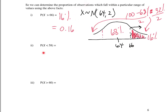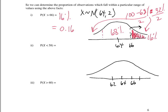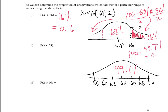Let's continue with values that we know and answer the next one about this same distribution — X is normal with a mean of 64 and a standard deviation of 2. Let's redraw the values. Within one standard deviation are 66 and 62; within two standard deviations are 68 and 60; within three standard deviations are 70 and 58. So 58 lies three standard deviations from the mean. Within three standard deviations of the mean, I know there's 99.7% of the observations.